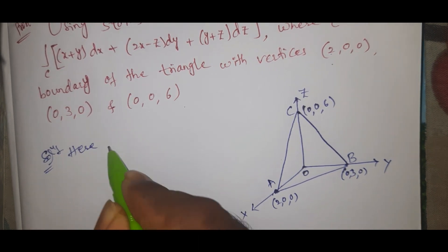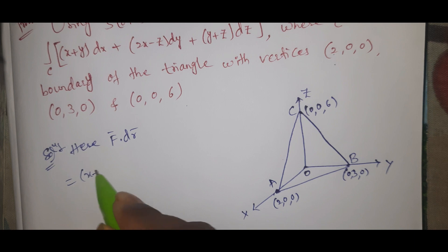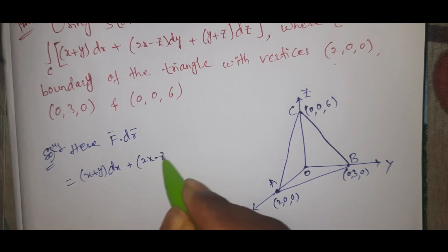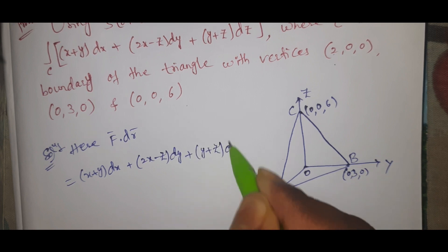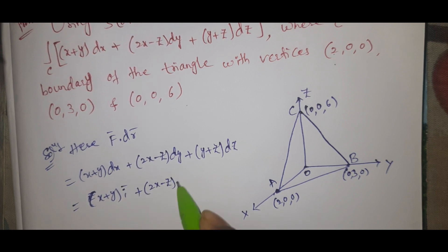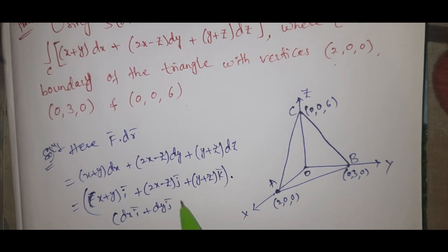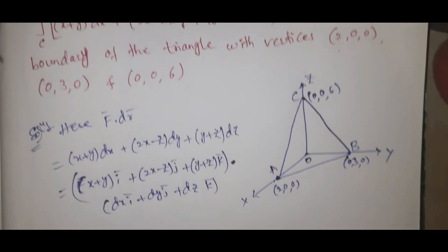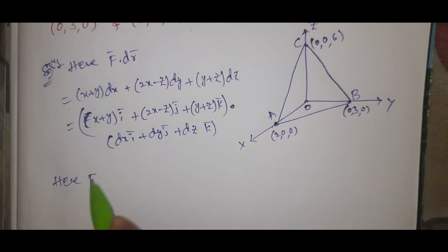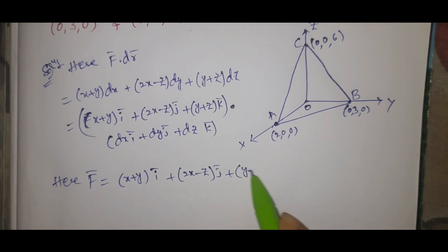Here, F̄ · dr̄ equals (x + y)dx + (2x − z)dy + (y + z)dz. So F̄ equals (x + y)î + (2x − z)ĵ + (y + z)k̂ dotted with dr̄, where dr̄ = dx î + dy ĵ + dz k̂.